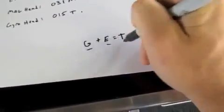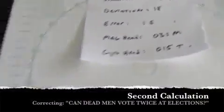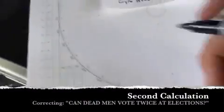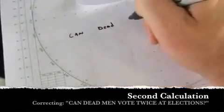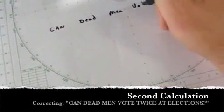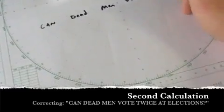But the next thing to do is we're going to check that, and that involves a second calculation using the rest of the data that we used. This is where the Can Dead Men Vote Twice at Elections acronym comes in. If you remember that, then you should be able to solve these problems no problem.